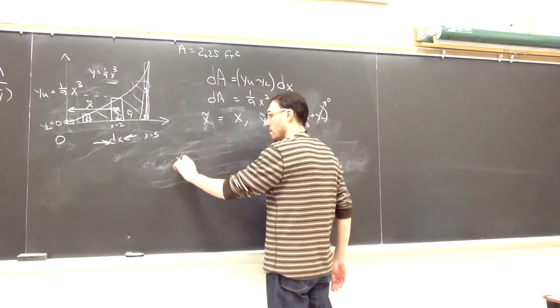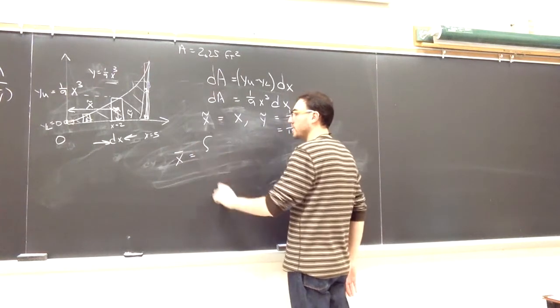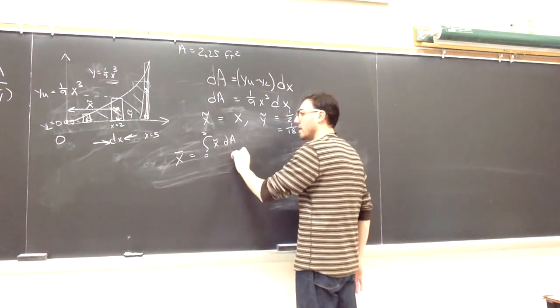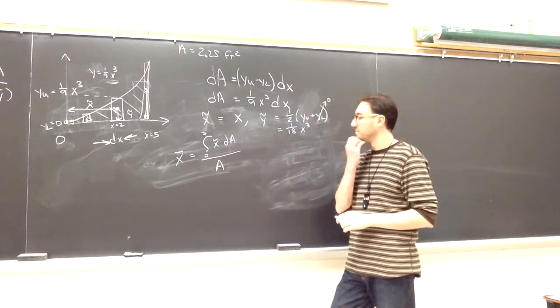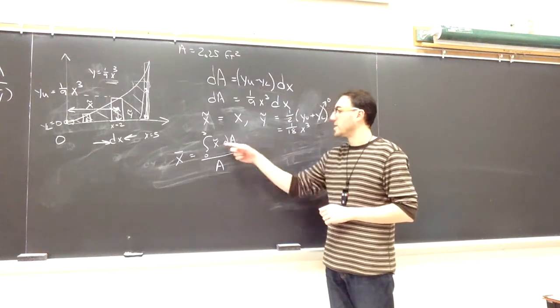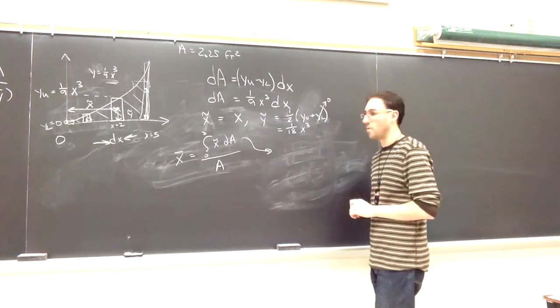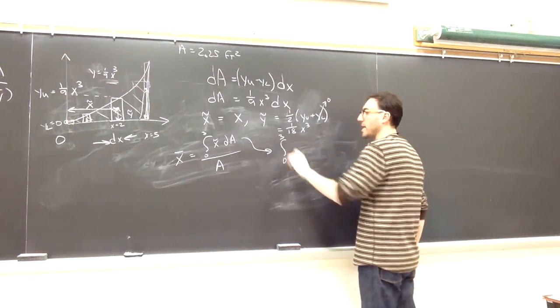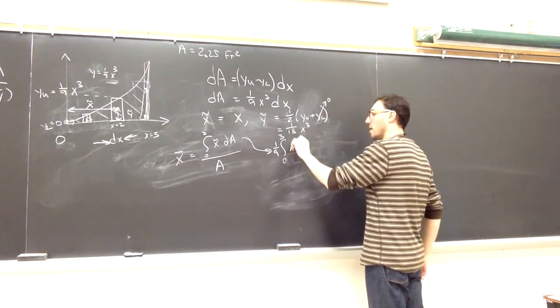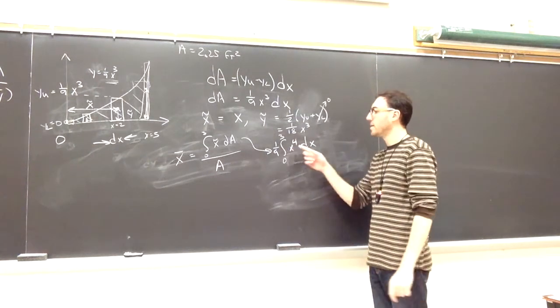All right, now we can go and find x bar. Our x bar was defined on the previous page. I'm going to integrate along those same bounds 0 to 3 my x tilde times dA, and I'll divide that by the area, which I found in that previous step. So the denominator is already done. I know it's 2.25. So it's that numerator that I have to figure out using another integration. So I'll just look at the integral for right now. I want to integrate from 0 to 3 x tilde, which is x, times dA, which is defined here. So I take dA and multiply it by x, so I get one-ninth x to the fourth dx.